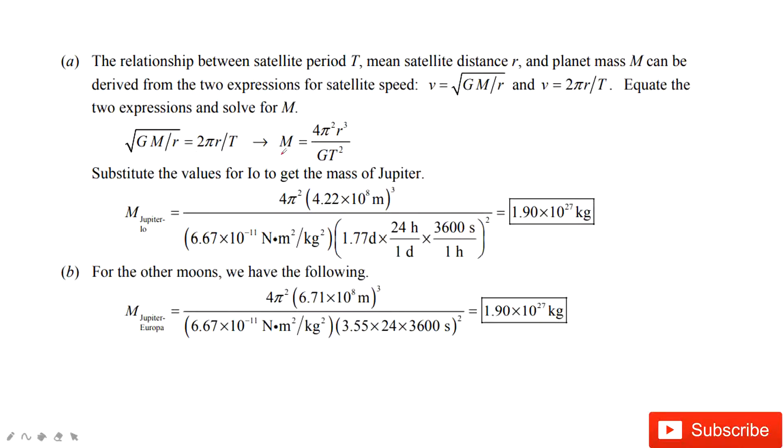So we can see after we get this equation, we input the known quantities inside. We find Jupiter's mass in this one, if we just consider the moon Io.